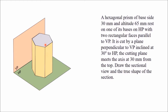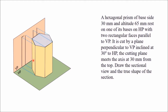In this type of problem, we will draw the projection of the solid first. We have to draw that view first in which the true shape of its base is visible. When you look from the top, the true shape of the base will be visible. Therefore, the top view will be drawn first, where you will get a hexagon with these two sides of the hexagon parallel to the XY line.